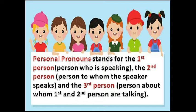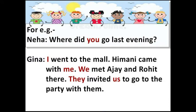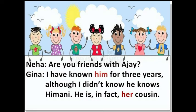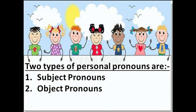Have you understood, children? Now let us see this conversation as an example. Neha: 'Where did you go last evening?' Gina: 'I went to the mall. Himani came with me. We met Ajay and Rohit there. They invited us to go to the party with them.' Neha: 'Are you friends with Ajay?' Gina: 'I have known him for three years. Although I didn't know, he knows Himani. He is in fact her cousin.' Children, the words in bold red in this conversation are personal pronouns, and there are two types: subject pronouns and object pronouns.